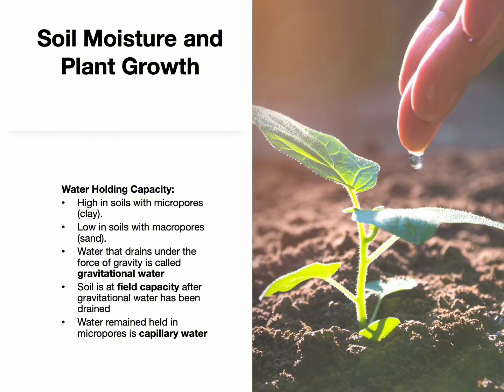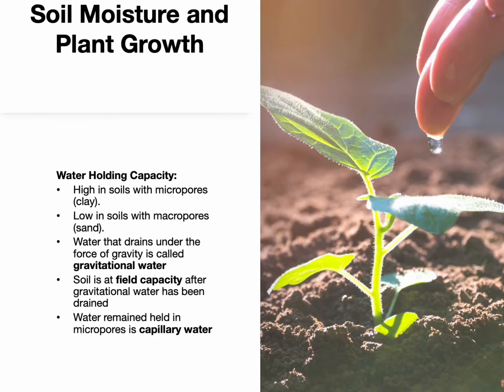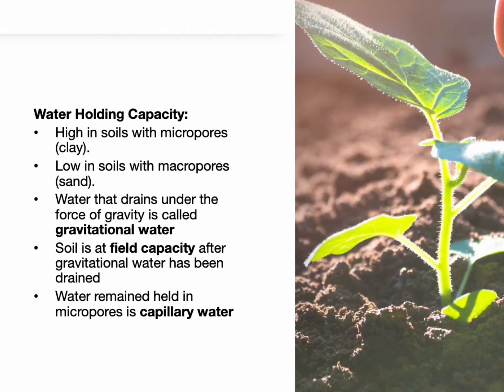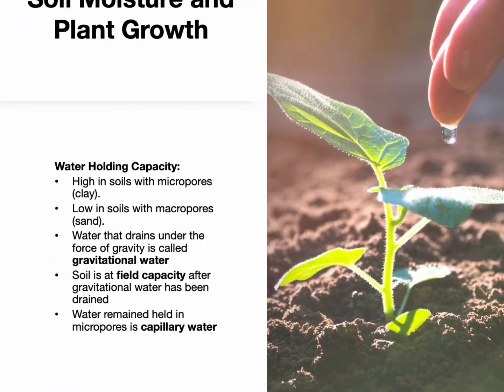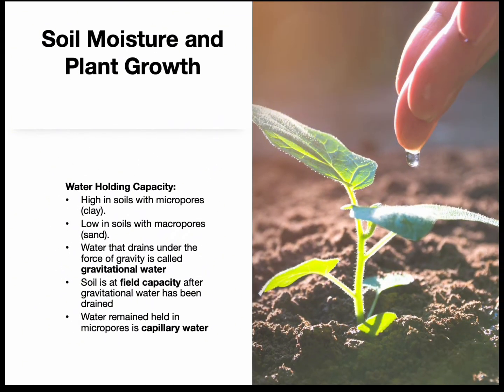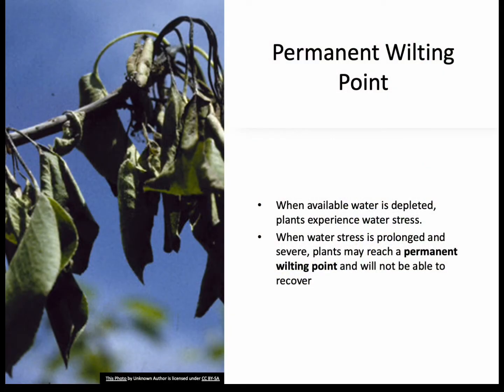Soil water is held in micropores as capillary water, which is available to plants. When water drains from macropores, the soil reaches field capacity, meaning it's holding as much water as possible without becoming waterlogged. If plants don't get enough water, they can experience stress or even die. This is called the permanent wilting point — when available water is depleted and water stress is prolonged and severe, plants may reach permanent wilting point and will not be able to recover.